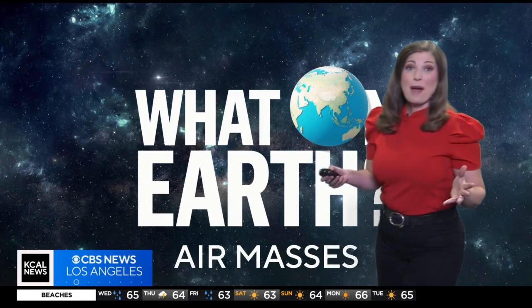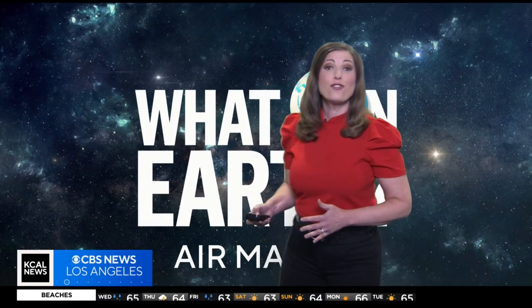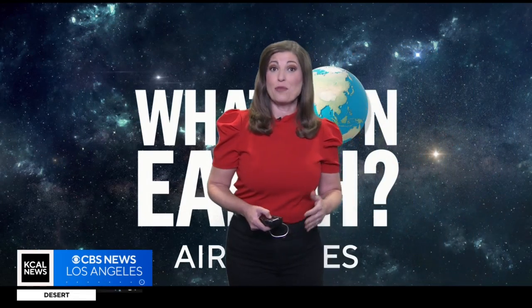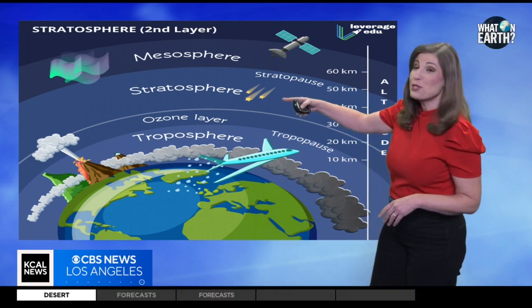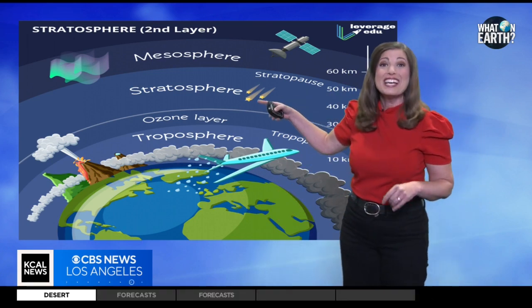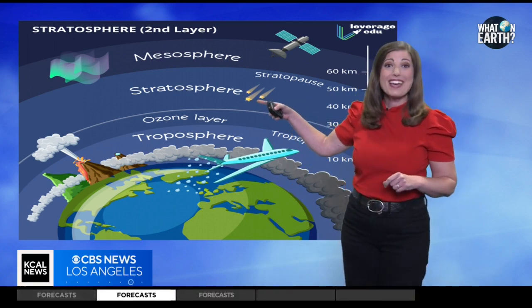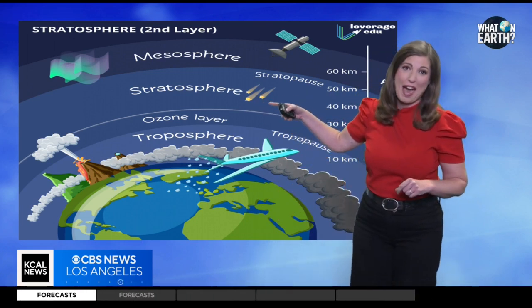An air mass is a large volume of air in which temperature and humidity are the same throughout. Air masses can extend thousands of miles across the surface of Earth and can reach from ground level all the way up to the stratosphere, 10 miles into the atmosphere.